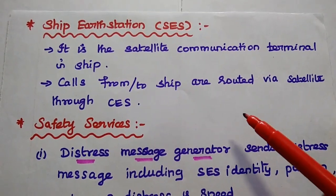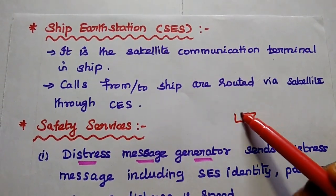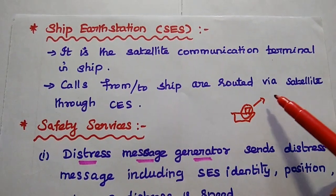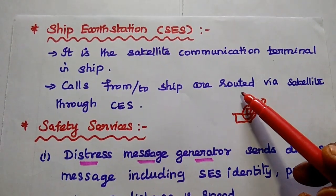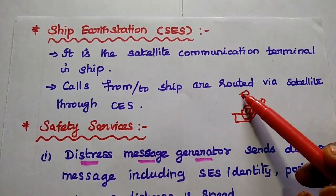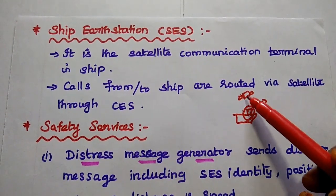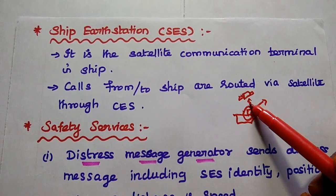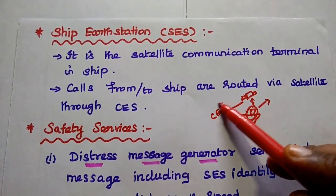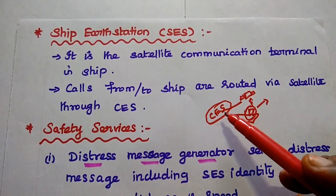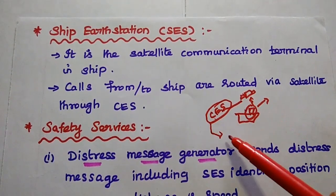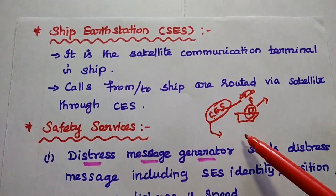The terminals available on the ship constitute the SES. We can make a call from the ship to the satellite, or receive calls from the satellite, only through the CES. The Coastal Earth Station is used to interconnect the satellite and the ground station, with ground support facilities linking to international and national telecommunication networks.